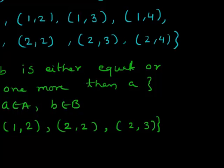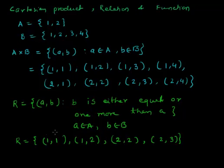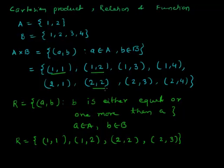The second element 2 is either related to 2 or one more, so it will be related to 3. So these four ordered pairs — (1,1), (1,2), (2,2), (2,3) — form the relation R. This R is called a relation, which is a subset of the Cartesian product. We are picking some elements of A cross B and defining a relation between them.